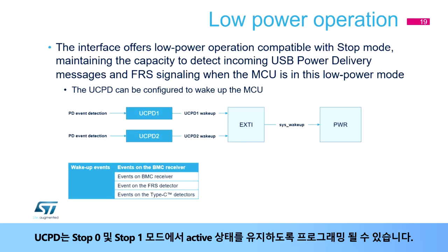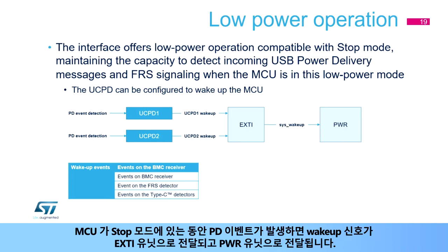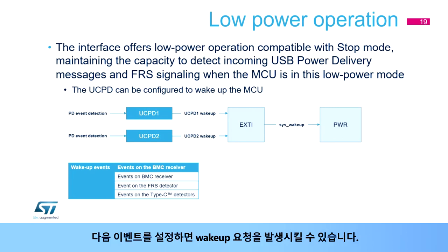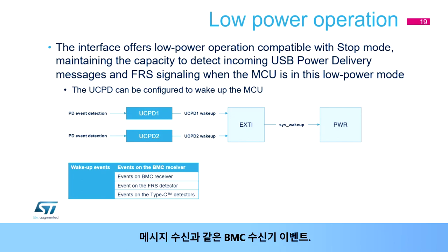The UCPD can be programmed to remain active in stop 0 and stop 1 modes. The detection of a PD event while the MCU is in stop mode causes a wake-up condition, signaled to the EXTI unit and then to the PWR unit. The following events can be configured to cause a wake-up request: events on the BMC receiver such as message receipt, fast roll swap request, and events on the Type-C detector such as attachment and detachment.